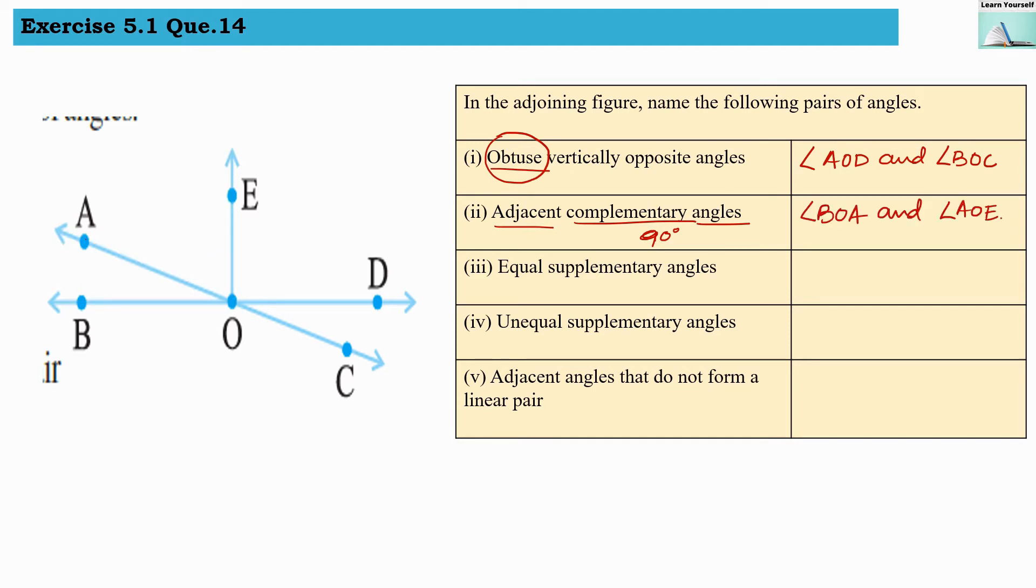Third question: equal supplementary angles. First of all, supplementary angles means the sum of measures of these angles should be 180 degrees. And they are saying equal.